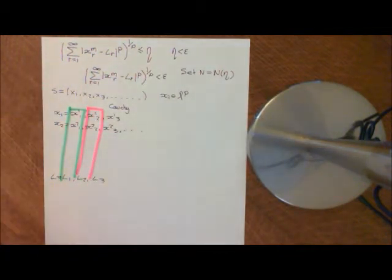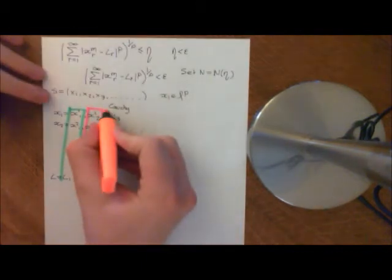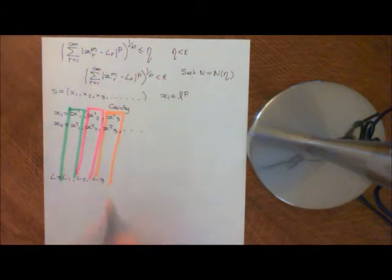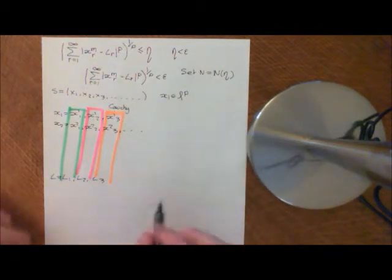And where's another color? Orange. So L3 is the limit of this third sequence, etc. And what we now want to prove is that this sequence L is, in fact, going to be an element of LP.